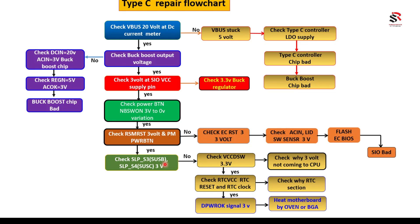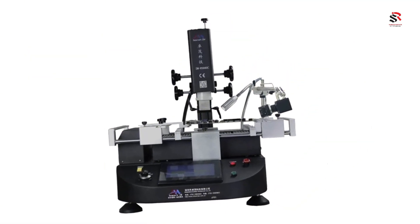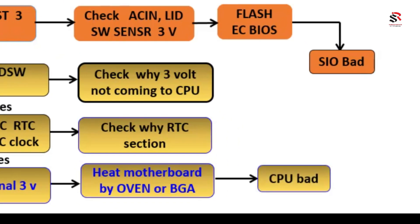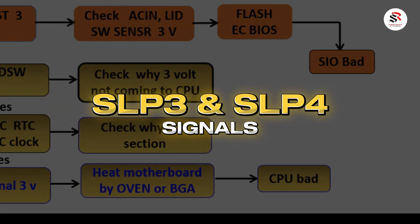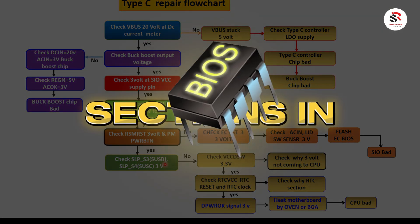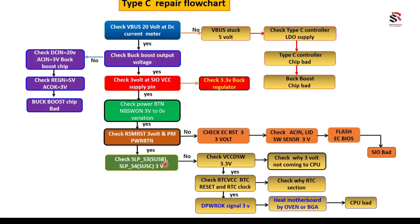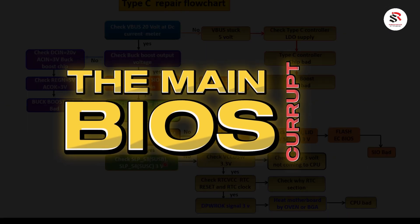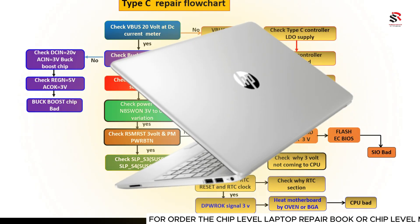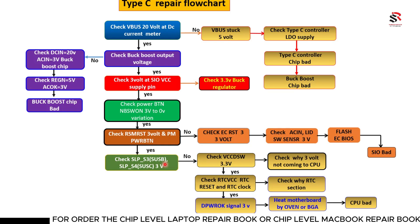You can heat the motherboard using hot air, a hot gun, or a BGA machine — whichever is convenient. If the problem is not solved after heating, the CPU may be bad since it is not generating SLP_S3 and SLP_S4. Also note that in some laptops the BIOS has an EC region — if the main BIOS EC region is corrupt, the laptop will not turn on. Similarly, some laptops have a TX region in the BIOS, and if that region is corrupt, the laptop will also fail to power on.